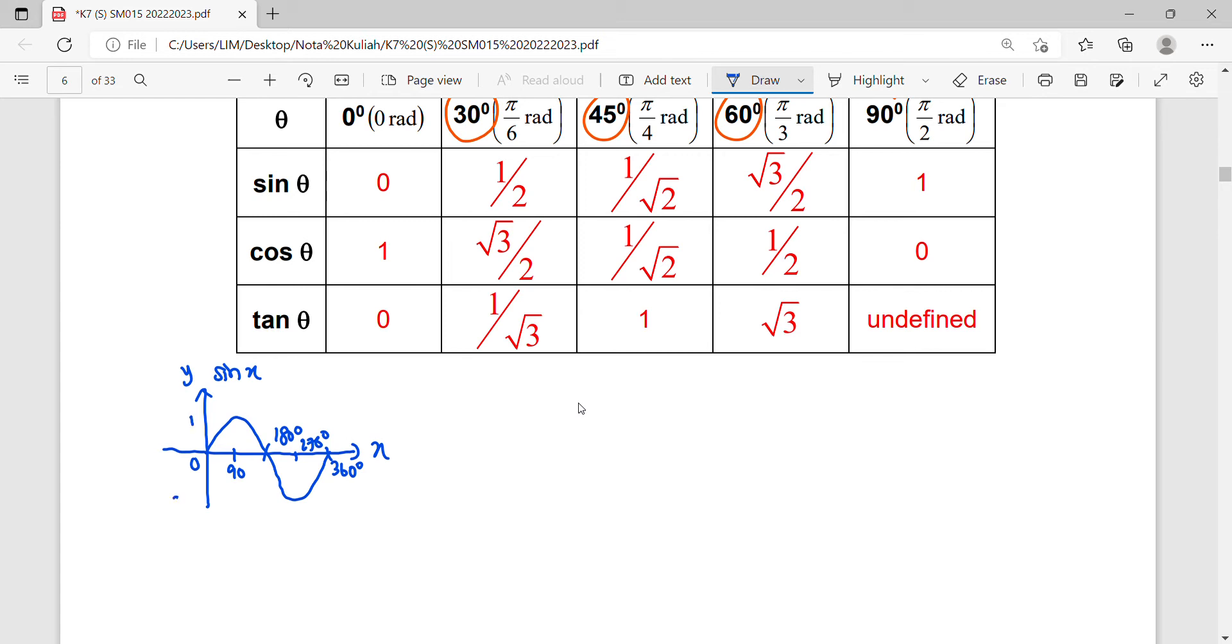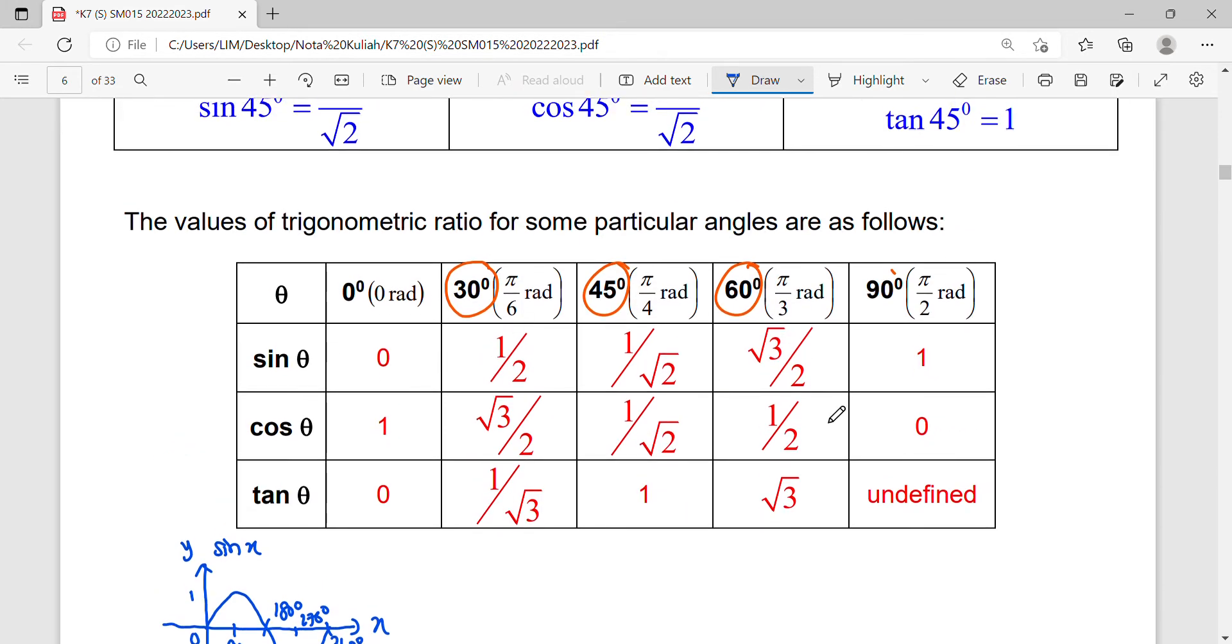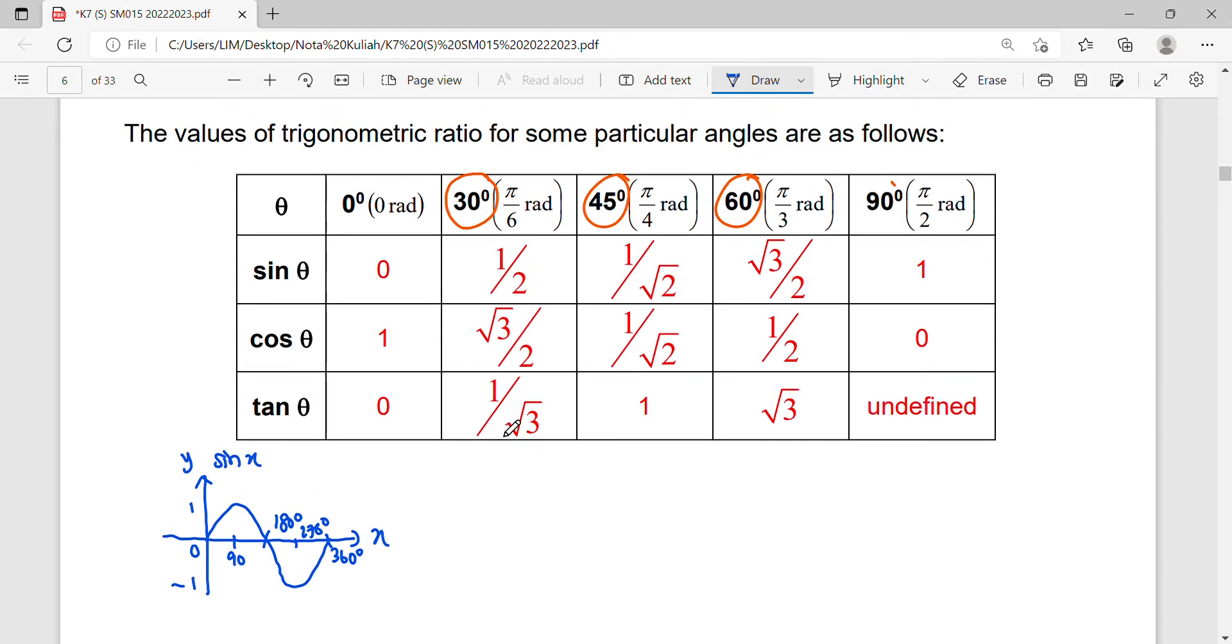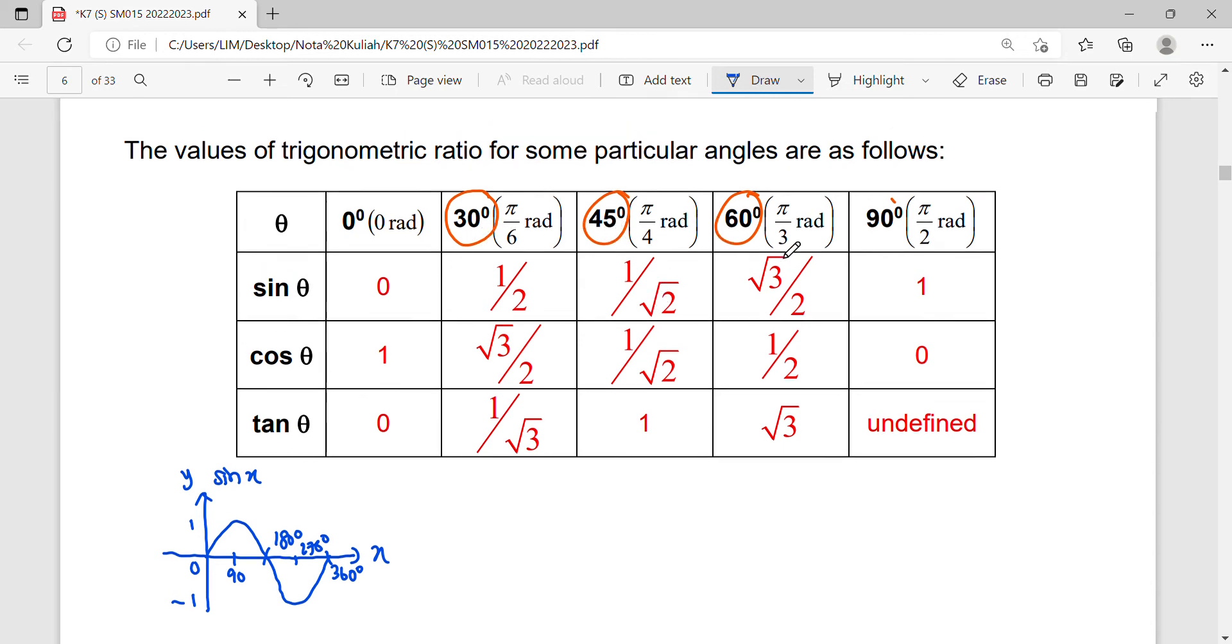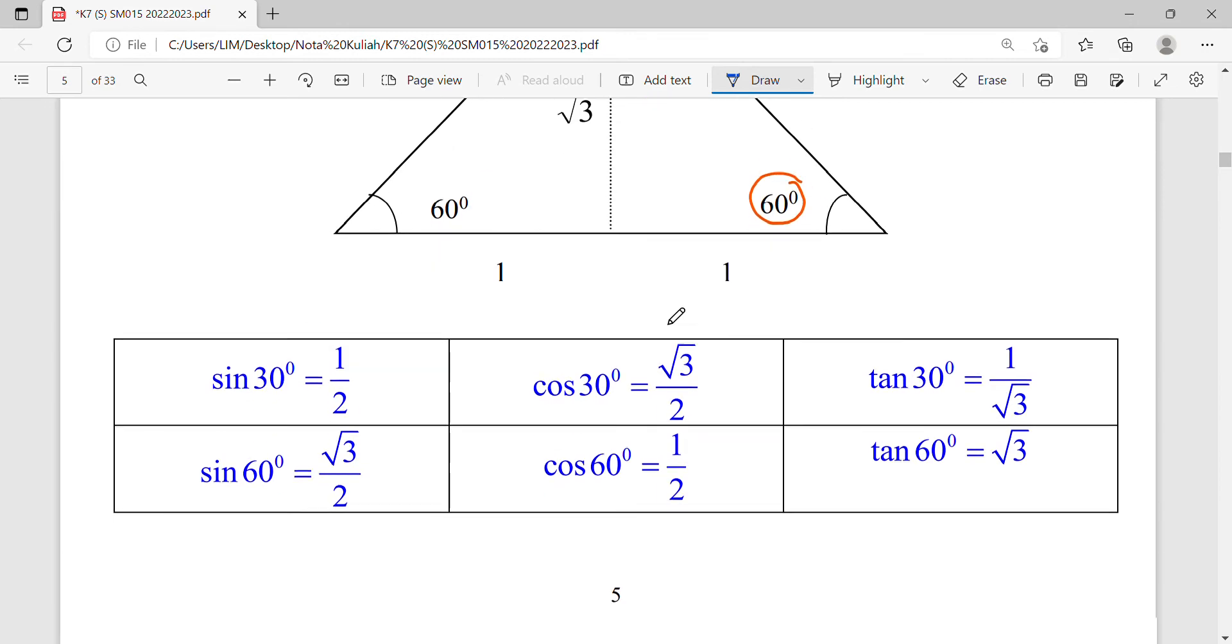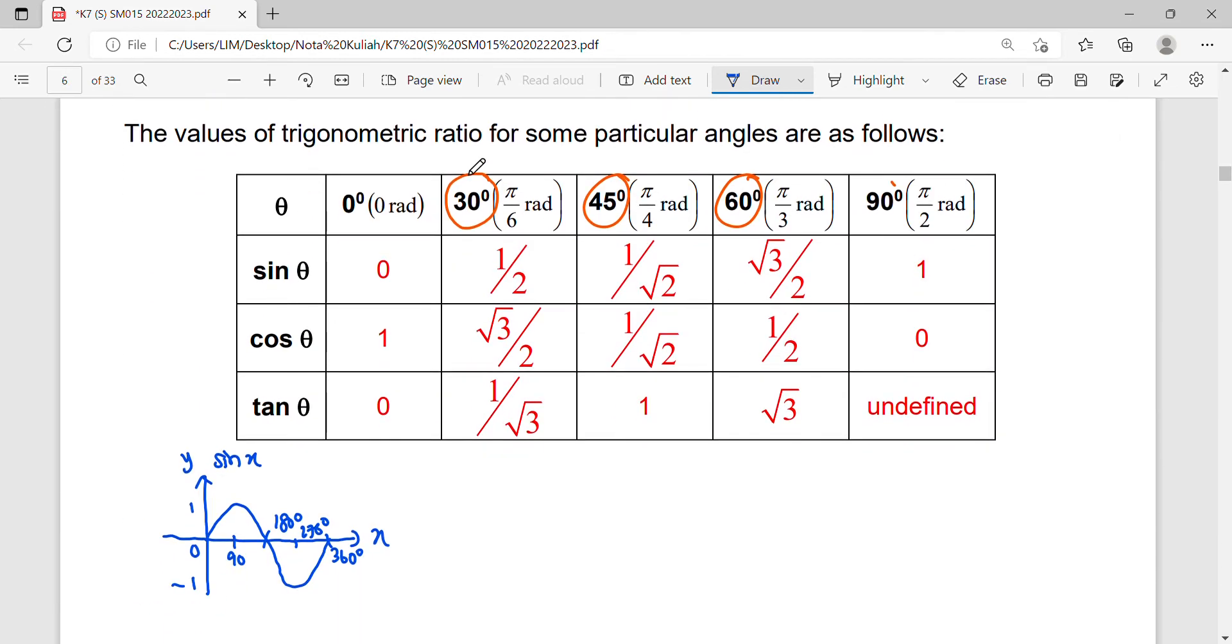The values here are zero, one, and negative one. Besides 30, 45, 60 from triangles, we actually have special values. When the angle is zero, the value is zero. When 90 degrees, it is one. When 180 degrees, it is zero. At 270, it is negative one, and at 360, it is zero.